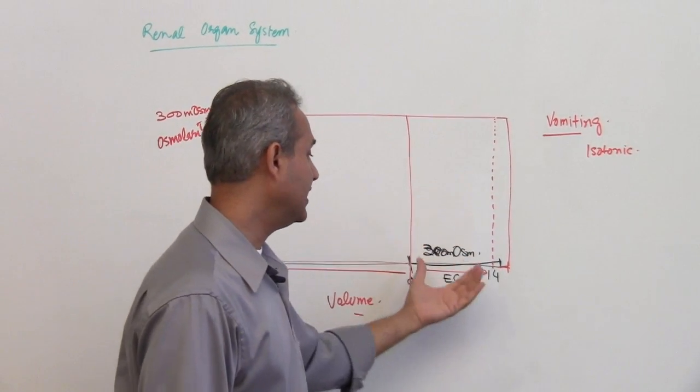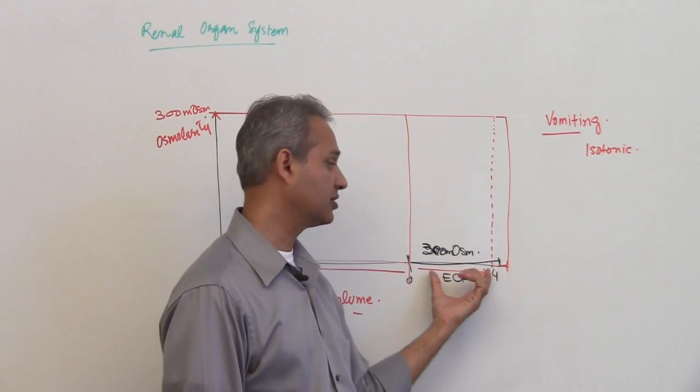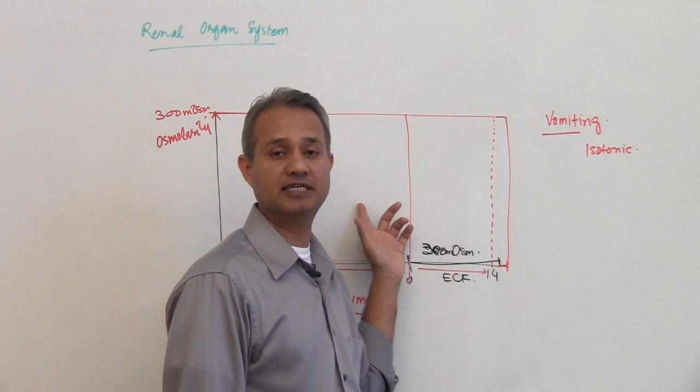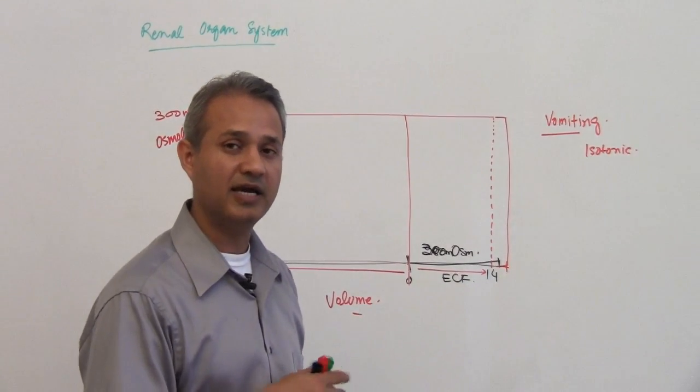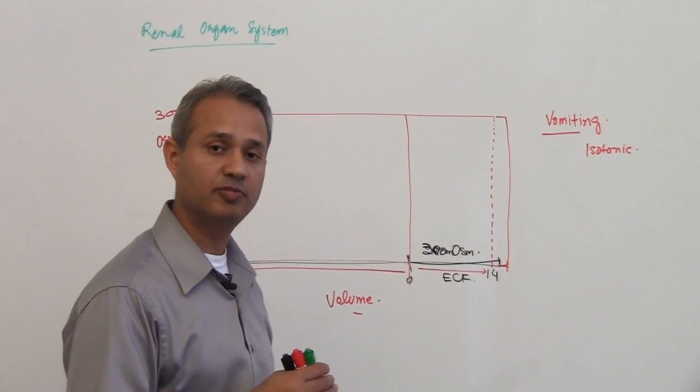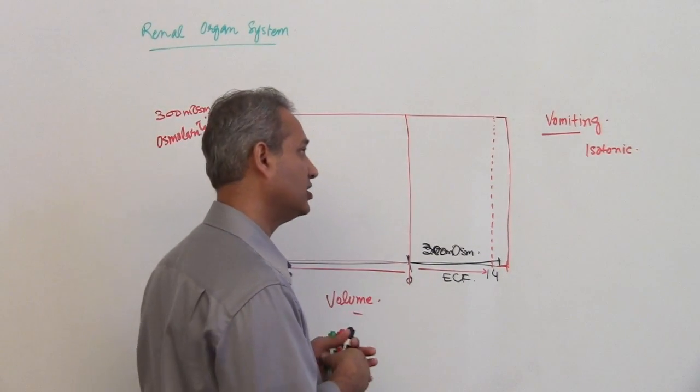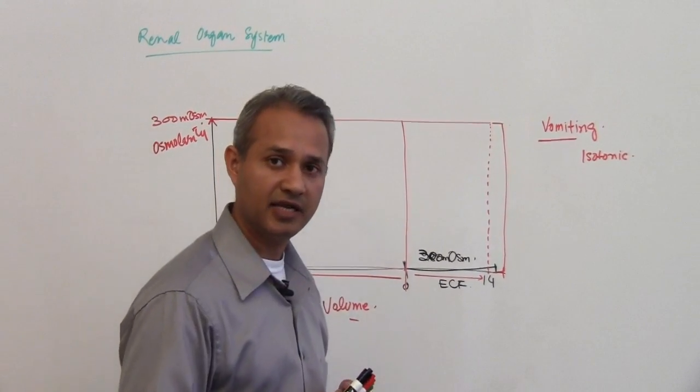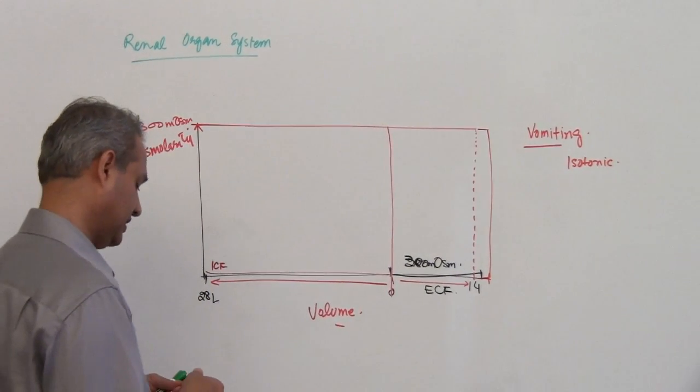So what would that mean? That would mean that ECF compartment of that person has shrunk but ICF is intact. This is also the case with the diarrhea too, but diarrhea can be of multiple types. There could be osmotic diarrhea, there could be isotonic diarrhea as well. So most of the time diarrhea is supposed to be isotonic, but you could have a variation in that.